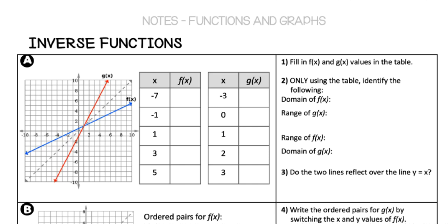We're using these steps on the left to figure some key things out. On the graph you can see two functions: one in red, that's g(x), and one in blue, that's f(x). Starting by asking what the values are at different x-points. At negative seven, f(x) is at negative three; at negative one it's at zero; at one it looks like it's at one; at three it's at two; and at five it's at three. For g(x), at negative three it's at negative seven, then negative one, then positive one, at two it's up at three, and at three it's up at five.